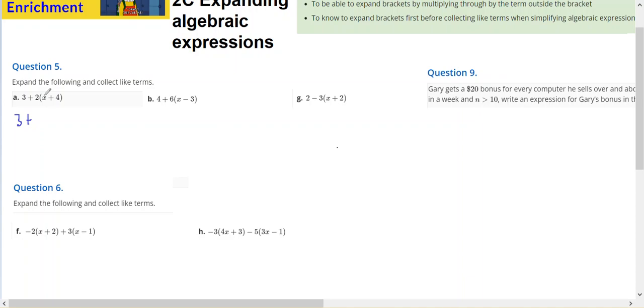I've got 3 plus 2 lots of x gives 2x plus 2 lots of 4 gives 8. The 3 and the 8 can be combined to give 11 plus 2x. It could be written as 2x plus 11 just as easily.